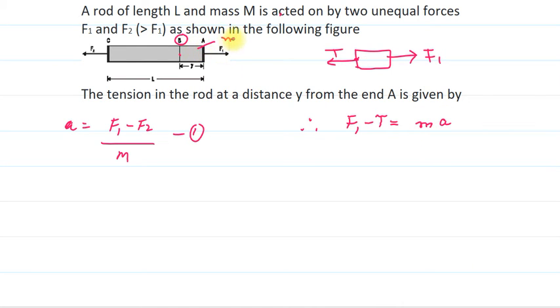So this portion's mass, students, I am taking as small m. I can calculate this. So it is F1 minus T equals, this m is basically the mass of this smaller portion of length y. As we know that total mass is M, total length is L, so mass per unit length is M by L. So this length is y, so the mass of this portion is M by L multiplied by y.